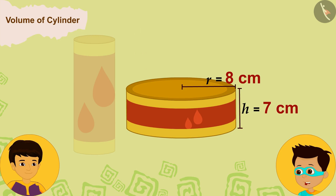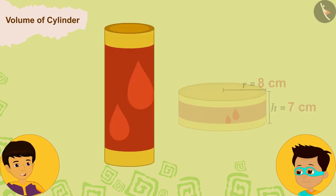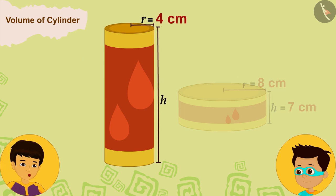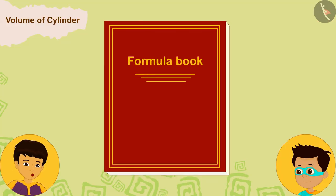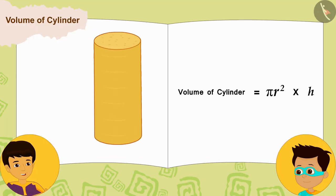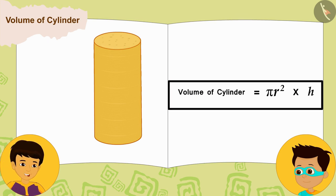And the radius of this tall box is four centimeters and its height is 28 centimeters. Let us now find the volume of both these boxes by taking help of the formula of the volume of a cylinder that we have written in the formula book.